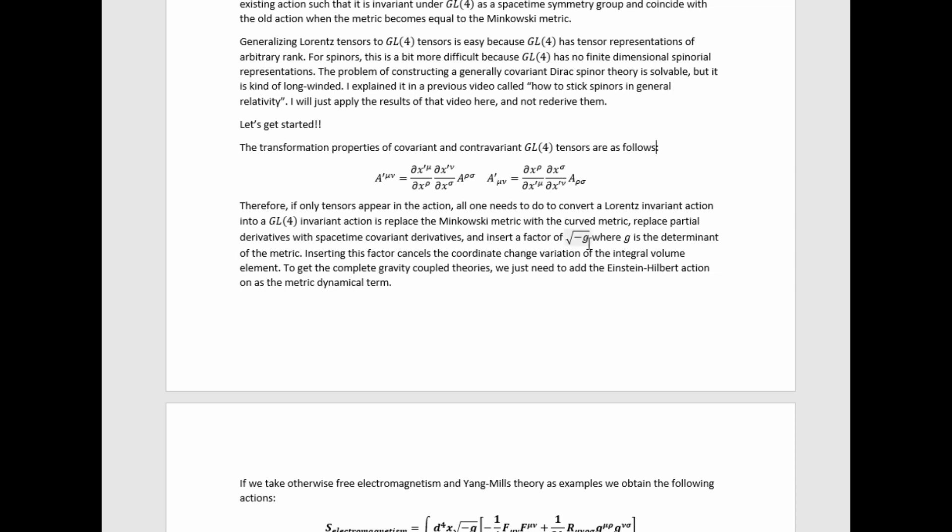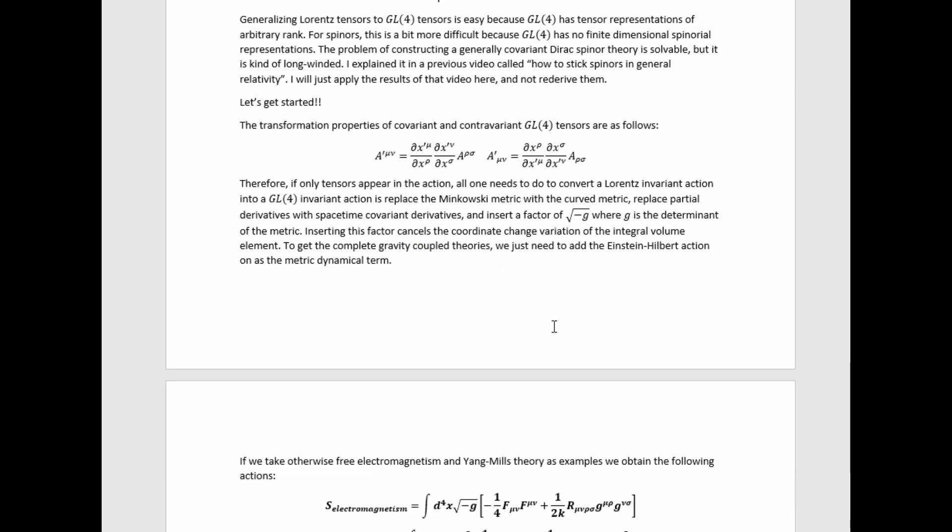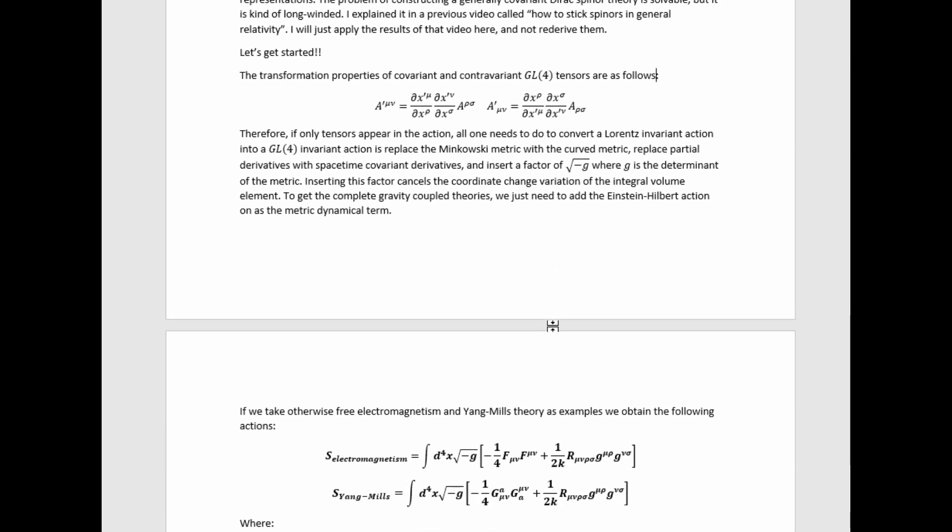and insert a factor of root negative g, where g is the determinant of the metric. Inserting this factor cancels the coordinate change variation of the integral volume element. To get the complete gravity coupled theories, we just need to add the Einstein-Hilbert action on as the metric dynamical term.